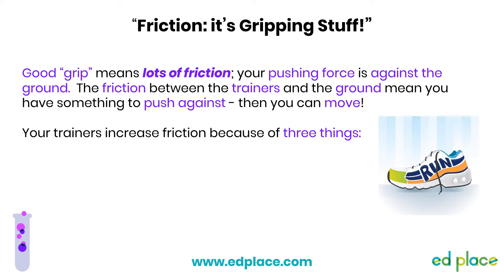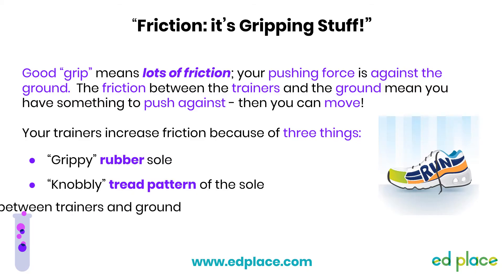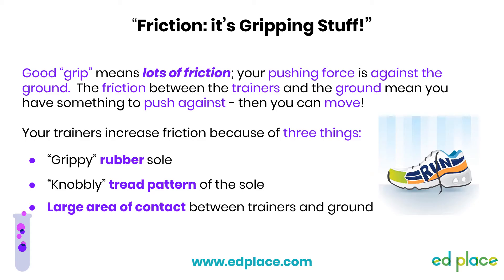Well, there are three things in particular. The sole of your shoe is made of rubber, which is a high-friction material - this gives you good grip. Then the tread pattern on your sole isn't smooth, it's got lots of knobbly bits to help grip the surface you're walking on. Finally, you have contact - that's the sole of your trainer. If you've ever walked on the pavement in football boots, where the studs give you a tiny area of contact, you'll know what I mean.